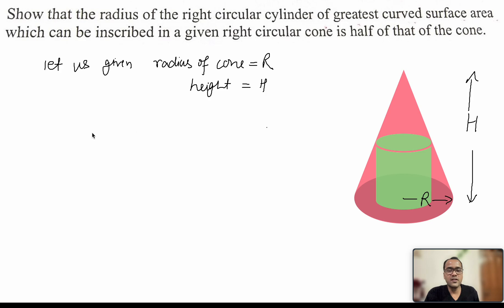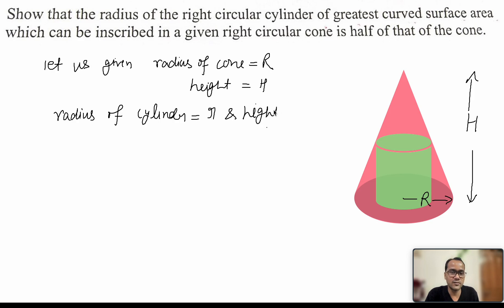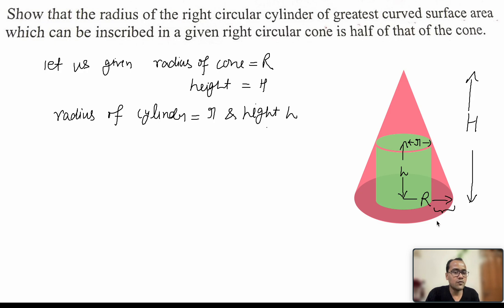Now let us take the radius of the cylinder. Let us say the cylinder radius is small r and height is small h. This height is small h and the radius of this cylinder is small r. If this is small r and the total radius is capital R, so the remaining part would be capital R minus small r.